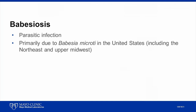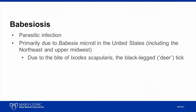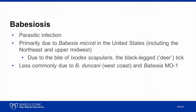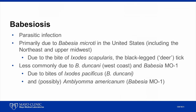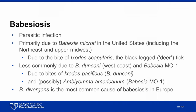Babesiosis is primarily due to Babesia microti in the United States and is highly endemic in the Northeast and Upper Midwest. It is primarily transmitted through the bite of Ixodes scapularis, the black-legged or deer tick. Less commonly, babesiosis is due to Babesia duncanii, primarily on the west coast, and the Babesia MO1 strain. Babesia duncanii is transmitted through Ixodes pacificus, the western black-legged tick, whereas Babesia MO1 is possibly transmitted by Amblyomma americanum, the lone star tick. Babesia divergens is another important pathogen and is the most common cause of babesiosis in Europe and Asia. All of the species listed can be detected by the Mayo Clinic PCR test, which is particularly helpful for patients who have traveled throughout the United States or overseas.